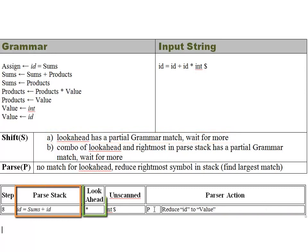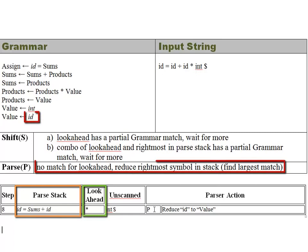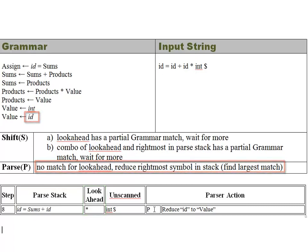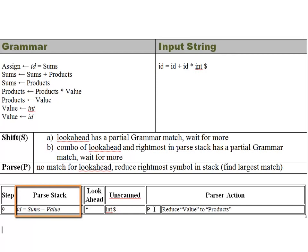In step eight, the ID has been shifted onto the parse stack and our look-ahead is a multiplication symbol. Looking specifically at the look-ahead, there's no match for the multiplication symbol alone, so we start reducing the rightmost symbol in the parse stack, which is ID. We reduce ID to value, then value to products.